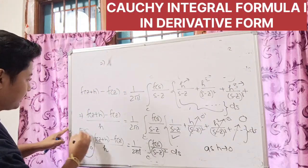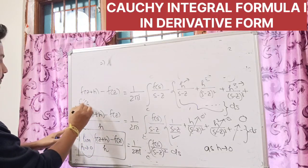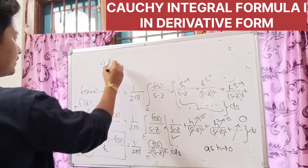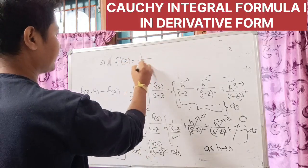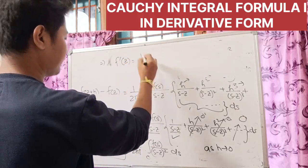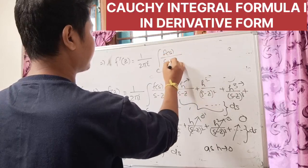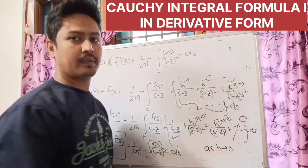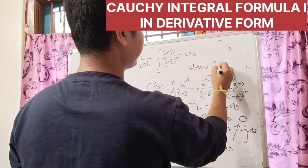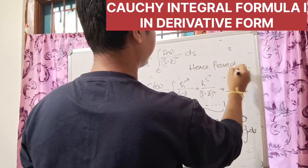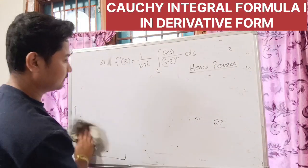Taking the limit as h approaches 0 on the left hand side gives f'(z). On the right hand side, all terms with h vanish, leaving only the first term. So f'(z) equals 1 by 2πi times integration over closed contour C of f(s) divided by (s minus z) squared, into ds. Hence the theorem is proved.